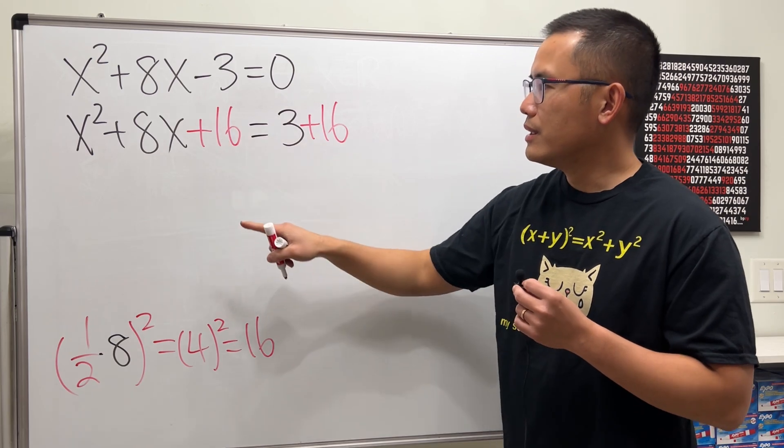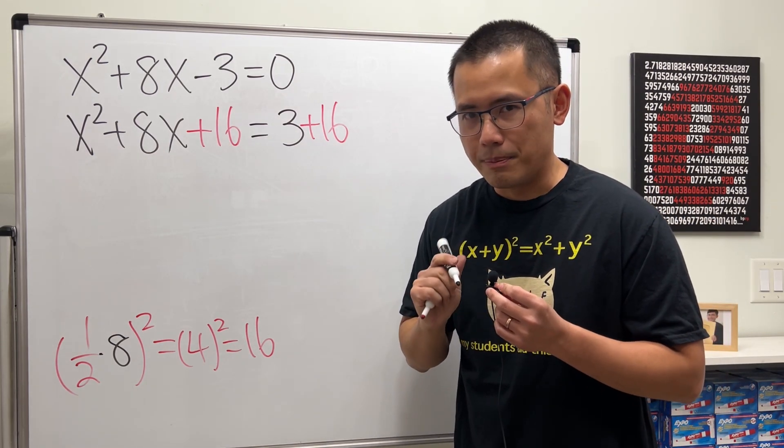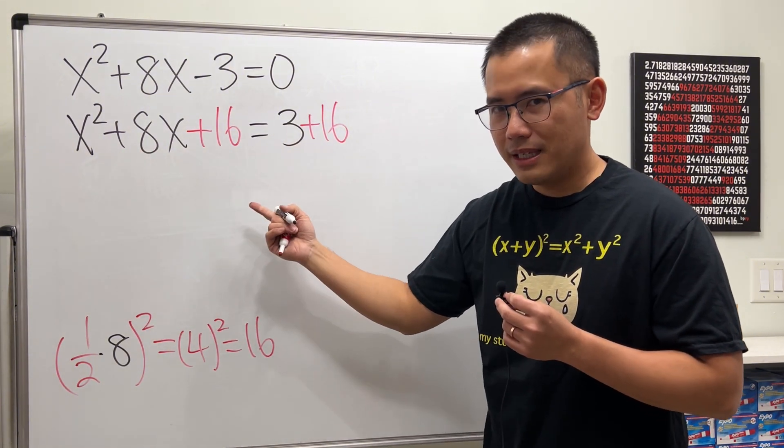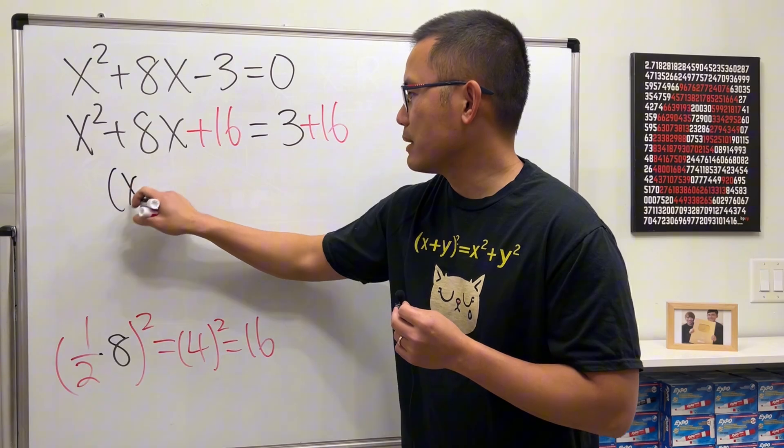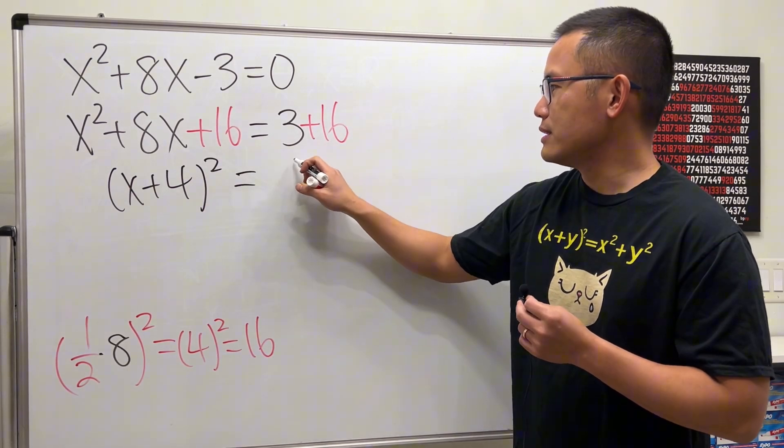After we have done this, you will notice that the left-hand side is factorable. Better yet, we will get a perfect square every single time. We get (x + 4) times (x + 4), which is just (x + 4)², and then the right-hand side of course is just equal to 19.